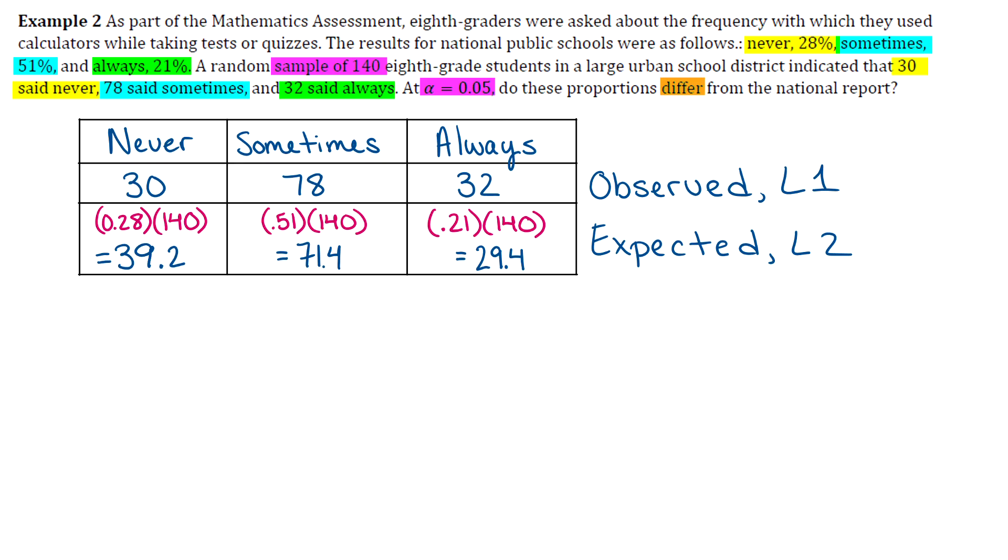So let's go ahead and do our hypotheses. We'll get those out of the way. And then we'll worry about putting stuff into our calculator. So the way we're going to state our null and alternative hypotheses for this type of situation, it's a little bit different. So for the null hypothesis, we're always going to make a statement like this. So we'll say that the distribution of students who use calculators on tests or quizzes is as follows. And then we're going to list what those percentages are.